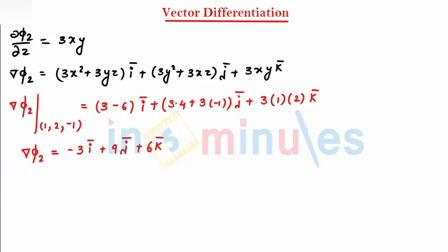I want the angle, students. So I can say cos θ is equal to ∇φ1 · ∇φ2 divided by |∇φ1| times |∇φ2|.